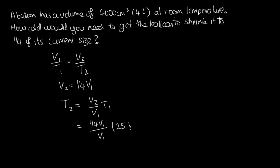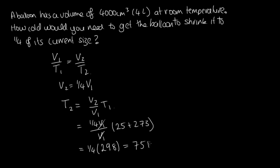So that's 25 plus 273. The V1 values cancel each other out, and we end up with a quarter of 25 plus 273, which equals 298. So a quarter of 298 gives us 74.5 Kelvins, or approximately minus 198 degrees Celsius.